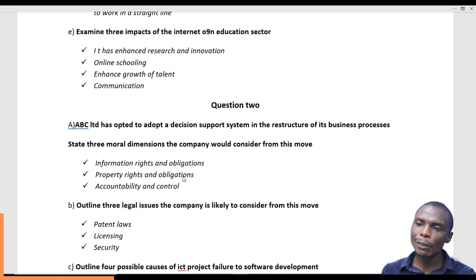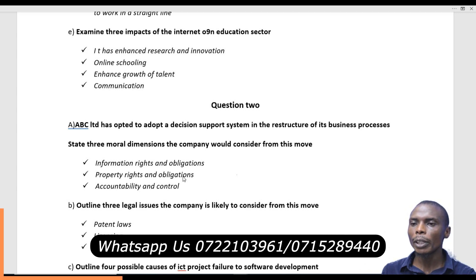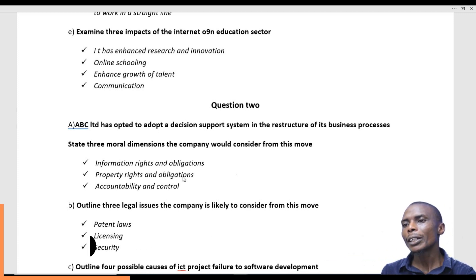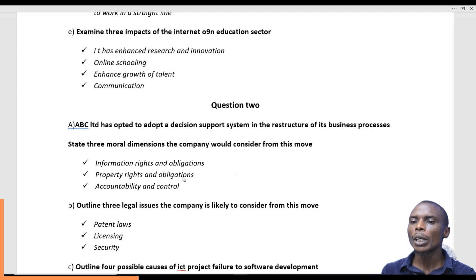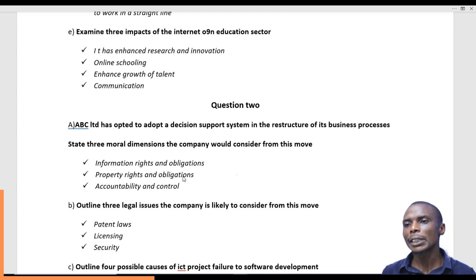The last moral dimension is what we call accountability and control. The organization is expected to be accountable. Accountability deals with being able to give an account or provide any required information at a particular time, and to control who is able to access this information at a particular time. Those are the three major moral dimensions that ABC will consider in adopting a decision support system.